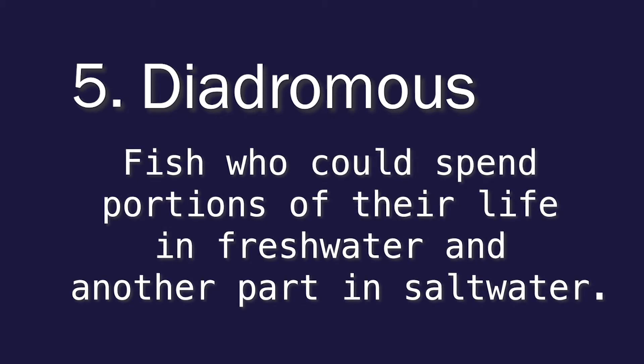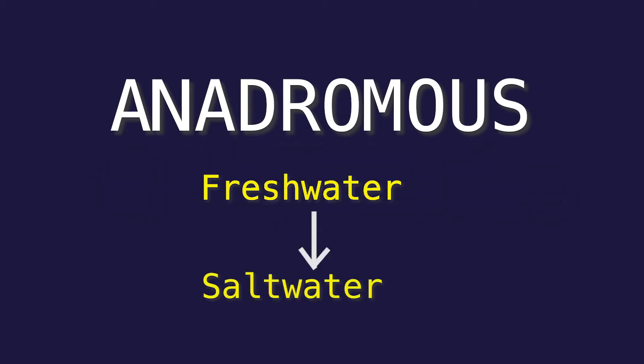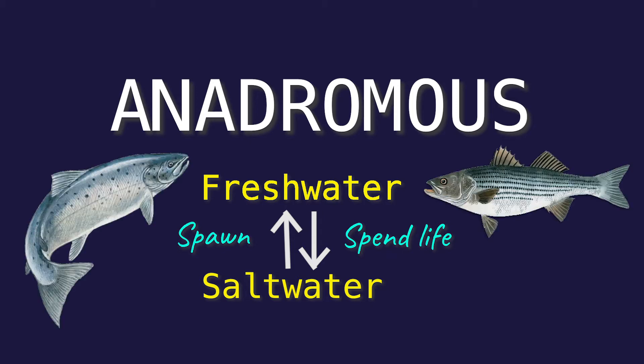The last terminology is diadromous, which generally describes fish that spend portions of their life in fresh water and another part in salt water. This applies to both anadromous and catadromous categories. Anadromous fish are born in fresh water and migrate to salt water to spend most of their lives, before returning to fresh water to spawn. Species include salmon, striped bass, and sturgeon.